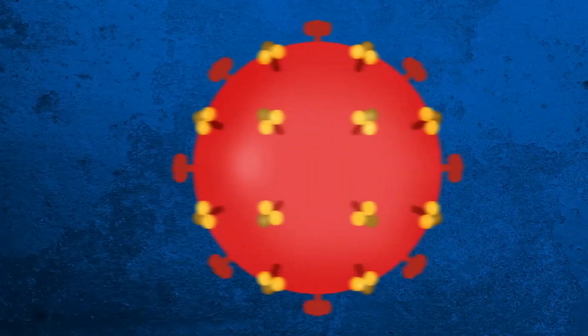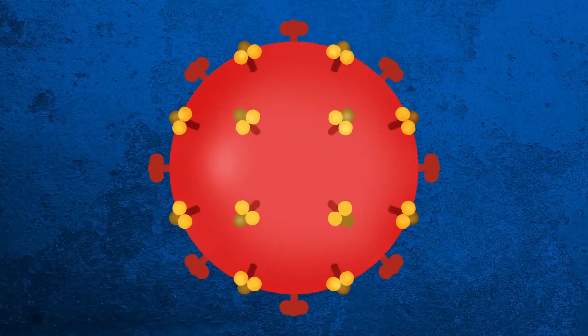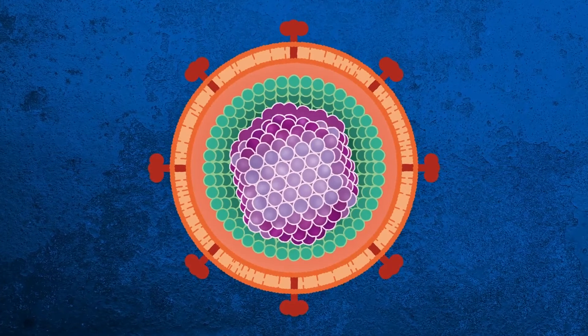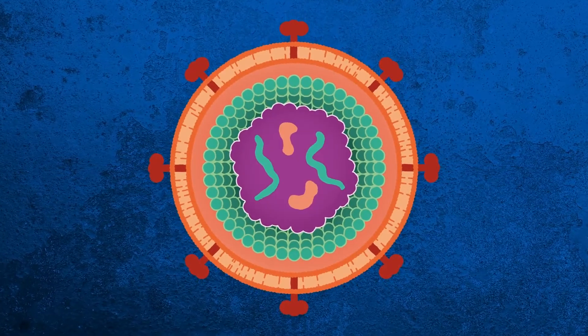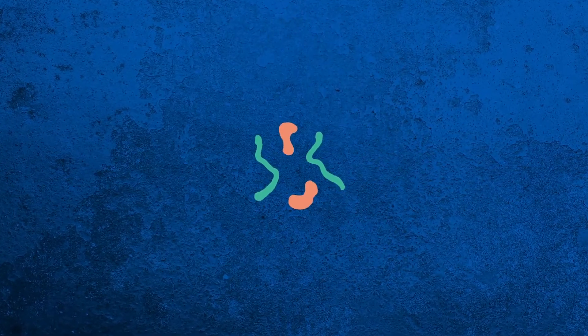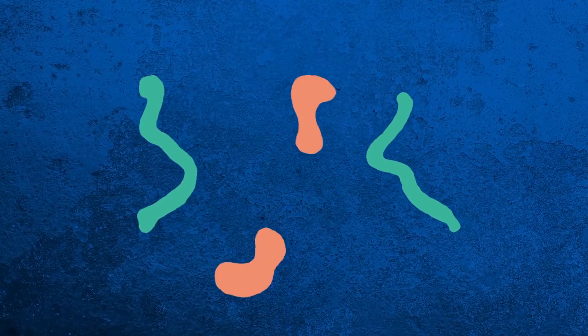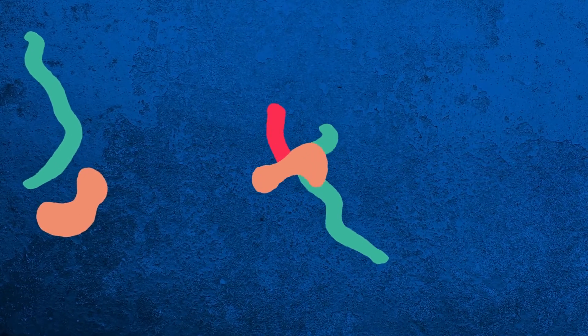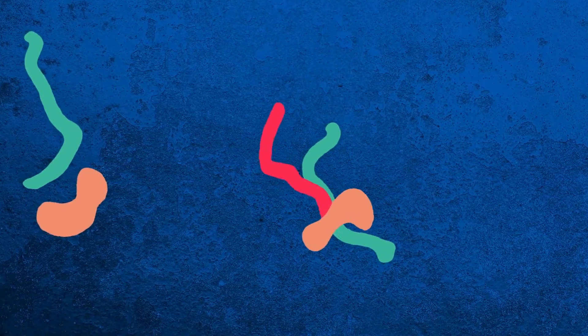Retroviruses differ from most other viruses in that upon entry into the cell, they can turn their RNA genome into double-stranded DNA, which is how we store our genetic information. Then the retrovirus can integrate its freshly made DNA genome into our genome, becoming part of us.